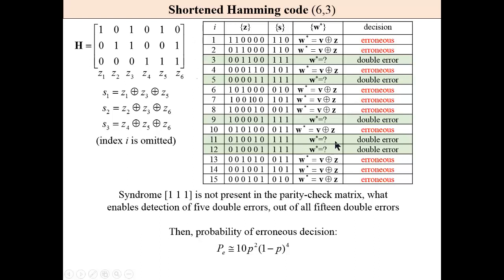What does it mean? That we have detected a double error. And that's it. Remaining 10 double errors are erroneously decoded. And then probability of erroneous decision is 10 times the probability of double error.